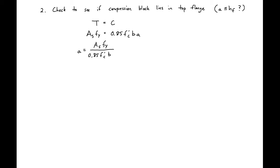Next we need to check and see if our compression block lies in our top flange using equilibrium. We'll look at tension equal to compression and solve for our a. We'll have area of all our steel, 9.36 square inches, times 60 ksi steel divided by 0.85 times 4 ksi concrete times our b which is 52 inches. We remember that b is the width of our compression block region.